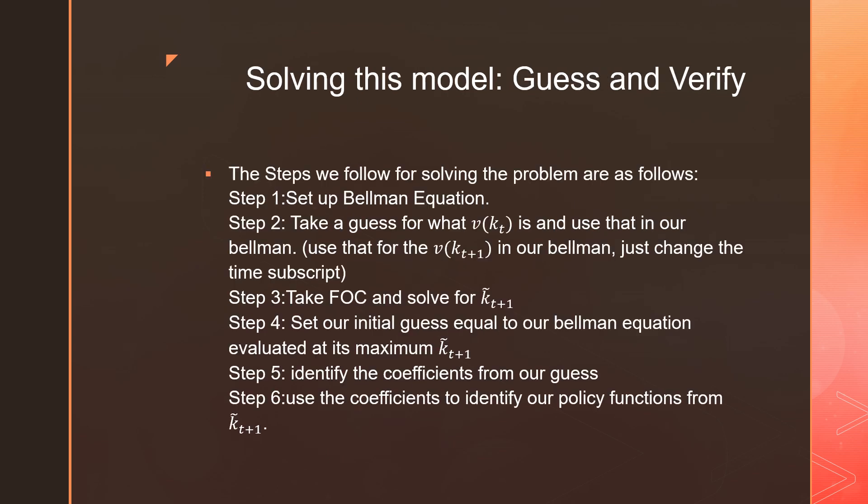So in terms of solving this model, we're going to follow the six steps, the same as I showed in our cake eating problem. Step number one, we're going to set up a Bellman equation. Step number two is we're going to take a guess for what our value function V(k_t) is for our Bellman and use that for the next period.